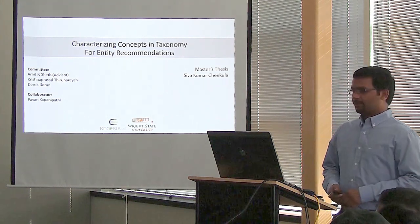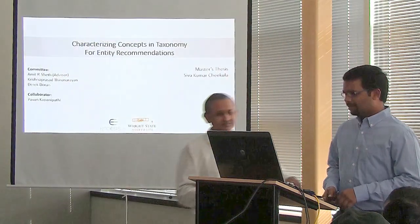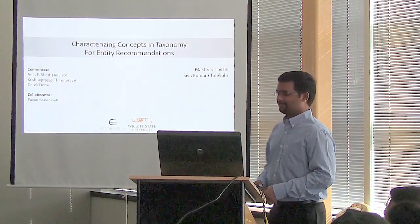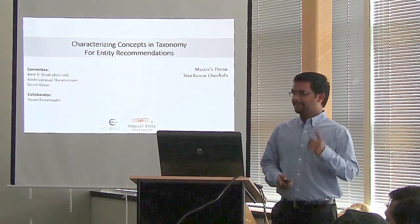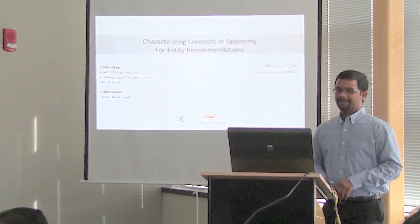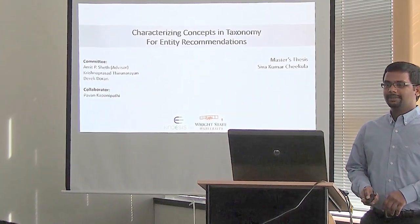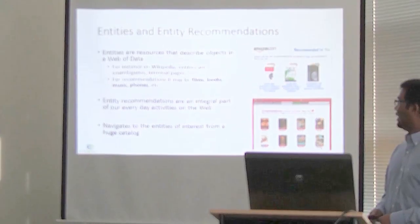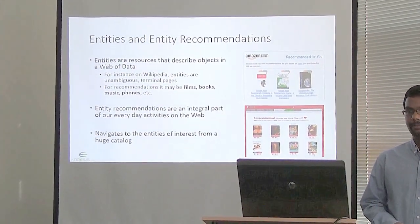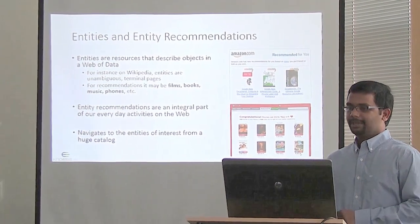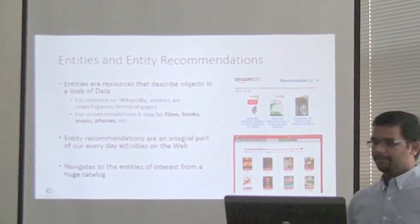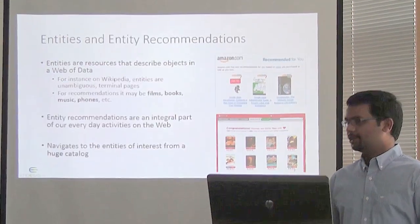Today I'll be talking about characteristics and concepts in crowdsourced taxonomy for Entity Recommendations. Following a semantic definition, entities are resources that describe objects in a web of data. For example, if you take Wikipedia, entities are its article pages. And for recommendations, entities can be films, books, or phones.